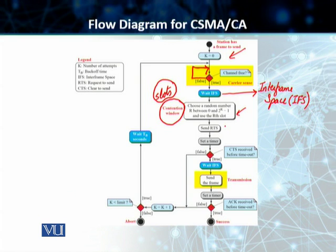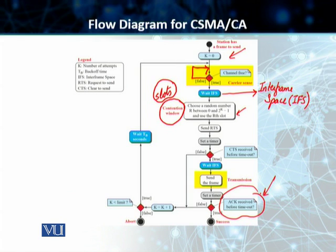Last but not least, the system works with acknowledgement. The system waits for an acknowledgement before it times out or decides that the transmission was successful. So the three different techniques used are IFS, the Contention Window, and Acknowledgement — all of which are used in CSMA/CA.